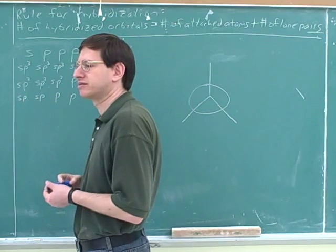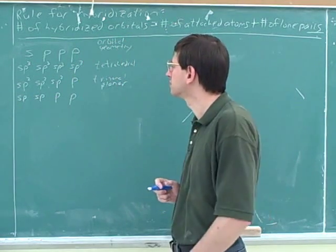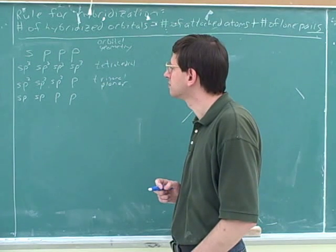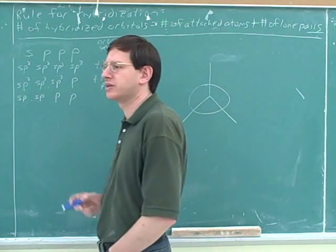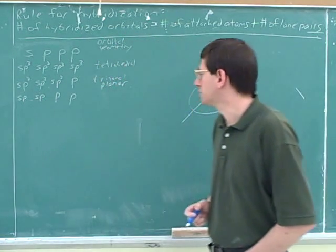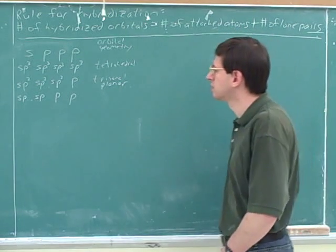Well, what would be the orbital geometry here? It's just between the two sp orbitals. How can the two sp orbitals get far apart from each other? Is that just linear? Yeah.